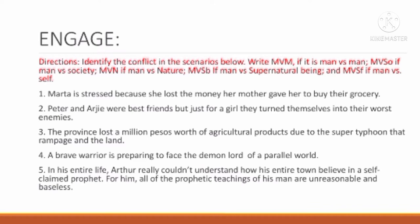Number one: Martha is stressed because she lost the money her mother gave her to buy their clothes. Answer: Man versus self — MVSF. Number two: Peter and RG were best friends, but just for a girl, they turned themselves into their worst enemies. Answer: Man versus man — MVM.